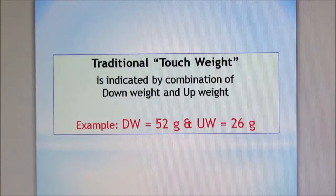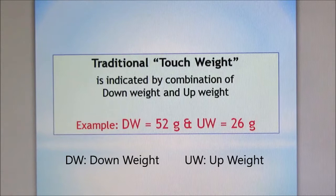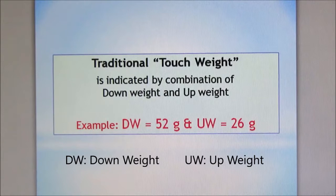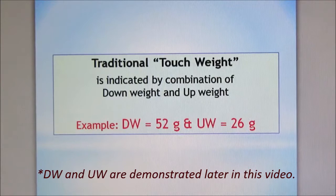Traditionally, touch weight is indicated by combination of down weight and up weight. For example, down weight 52 grams, up weight 26 grams or something like that.